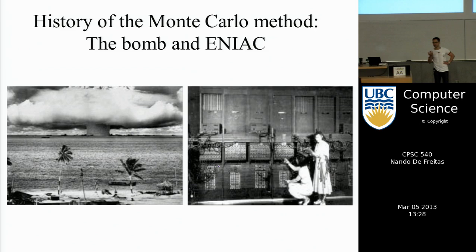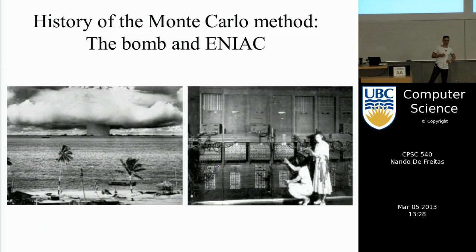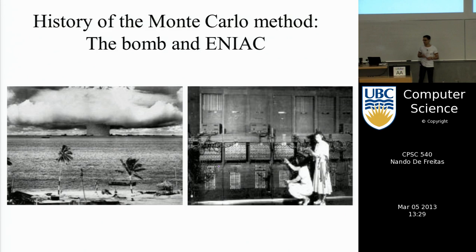The Monte Carlo method goes back to ancient Greece where it was used to compute pi. In published works, one of the first mentions is in a paper by a guy who worked for Guinness, who wasn't allowed to publish under his own name, so he called himself 'Student'. That paper was about the Student's t-distribution, and he used the Monte Carlo method to study it.